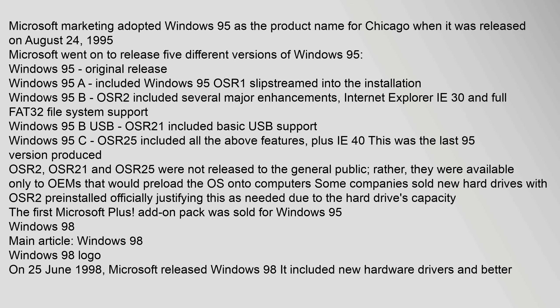Microsoft marketing adopted Windows 95 as the product name for Chicago when it was released on August 24, 1995. Microsoft went on to release five different versions of Windows 95: Windows 95 original release; Windows 95A, which included Windows 95 OSR 1 slipstreamed into the installation; Windows 95B (OSR 2), which included several major enhancements, Internet Explorer 3.0, and full FAT32 file system support; Windows 95B USB (OSR 2.1), which included basic USB support; and Windows 95C (OSR 2.5), which included all the above features plus IE 4.0. This was the last 95 version produced.